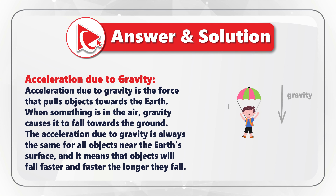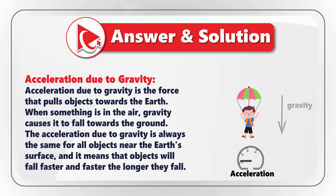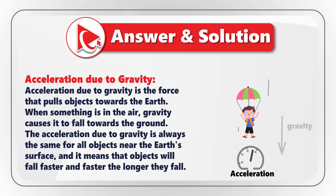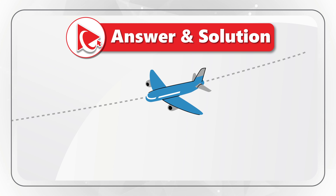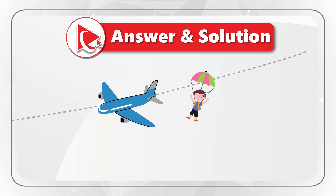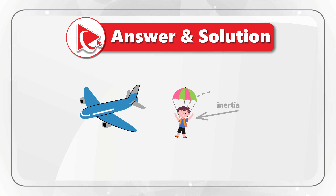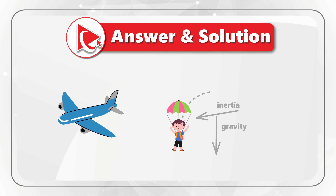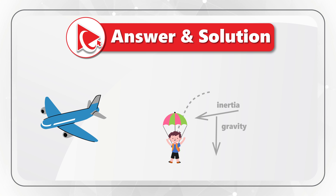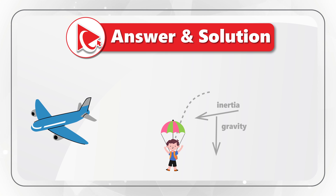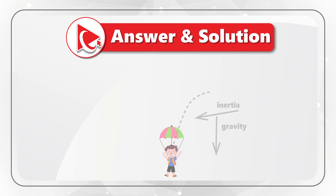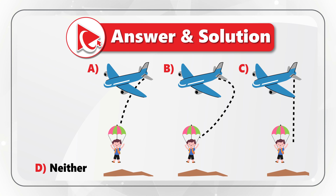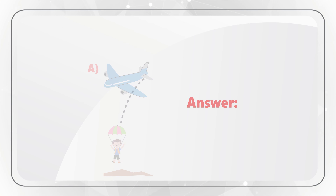Acceleration due to gravity is the force that pulls objects toward the Earth. When something is in the air, gravity causes it to fall toward the ground, and the acceleration due to gravity is the same for all objects near the Earth's surface — meaning objects fall faster and faster the longer they fall. After jumping, the parachutist initially maintains horizontal velocity due to inertia, then accelerates downward due to gravity until reaching terminal velocity. The deployment of the parachute increases air resistance, allowing for a controlled descent and safe landing. The closest answer describing this solution is Choice A.